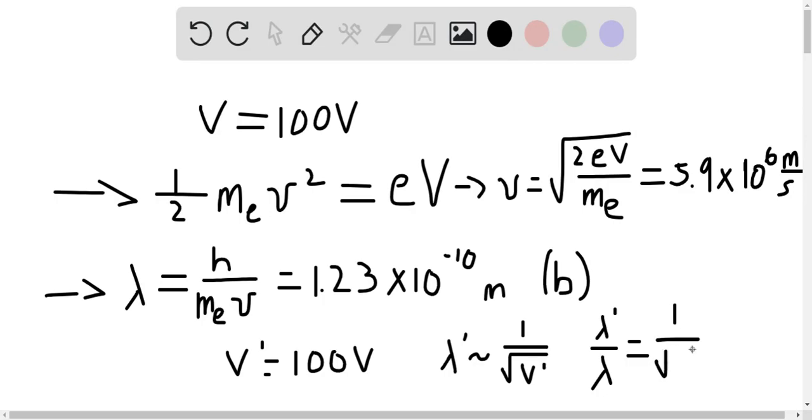So this is going to be equal to 1 divided by the square root of 100, because V prime is 100 times greater than V, and they're proportional to the square root, so this is going to be equal to 1 over the square root of 100, equal to 0.1.